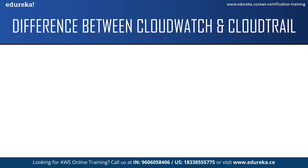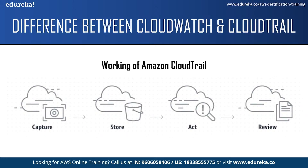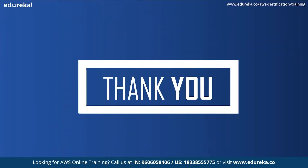Now let us look at the working of Amazon CloudTrail. CloudTrail captures and records user activities in AWS services and calls them CloudTrail events. It delivers these events to the CloudTrail console and stores them in S3 buckets. After the events are delivered, you can review all recent activities in your account, and you can also use CloudWatch events and alarms to set important automatic actions. To conclude, both CloudWatch and CloudTrail perform different functionalities but can be used hand in hand for monitoring your AWS resources and account. I hope this video was helpful. Happy learning.